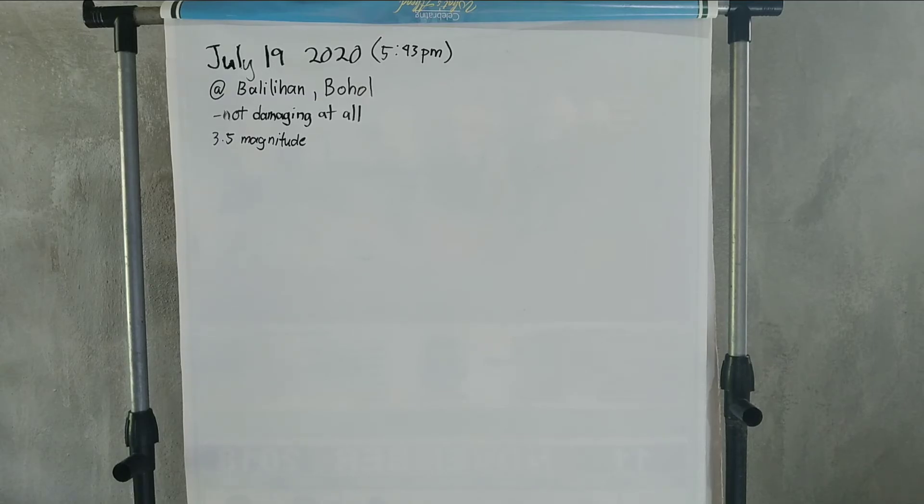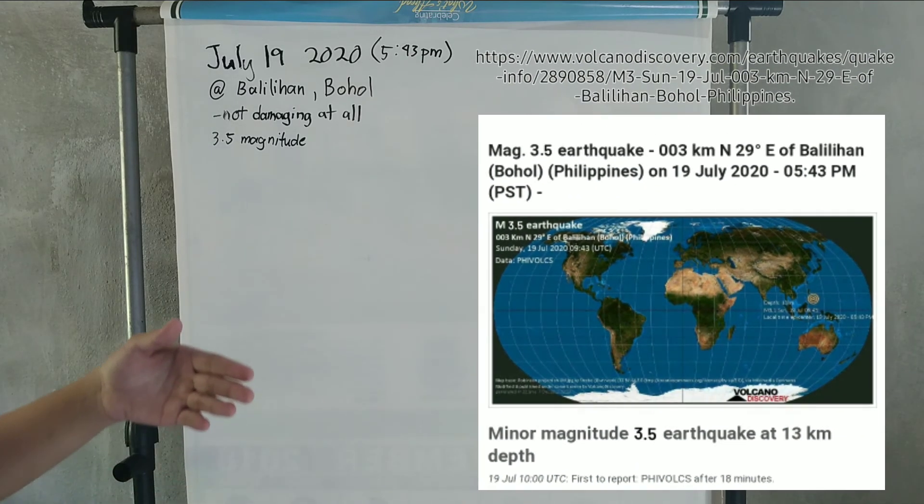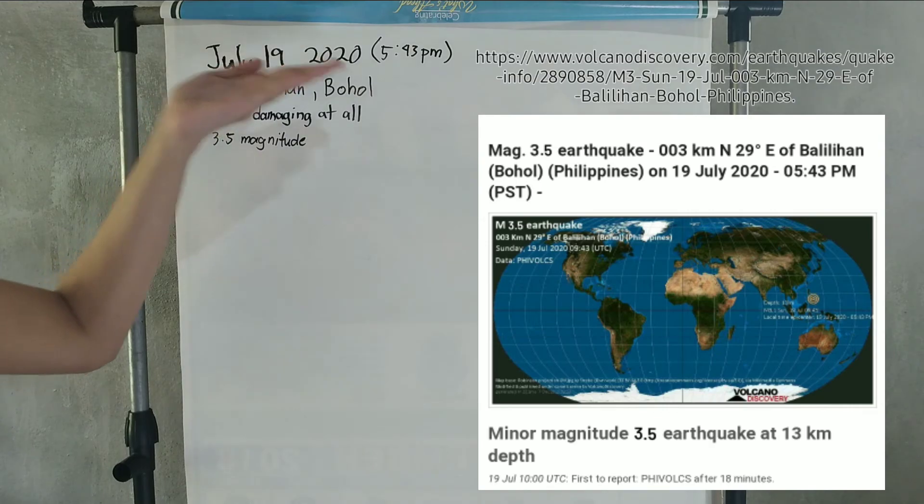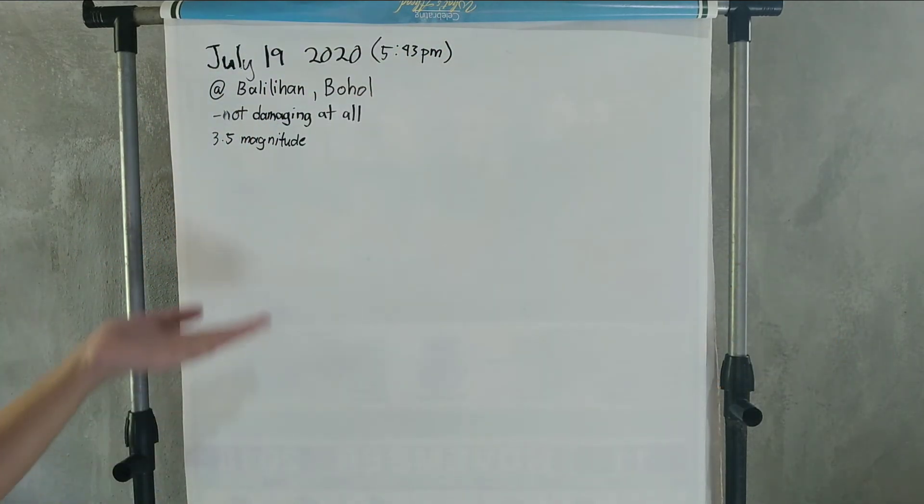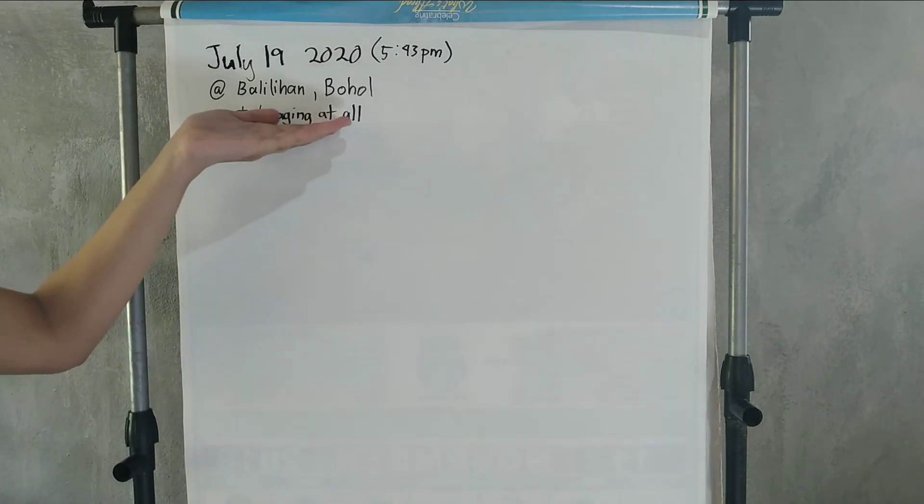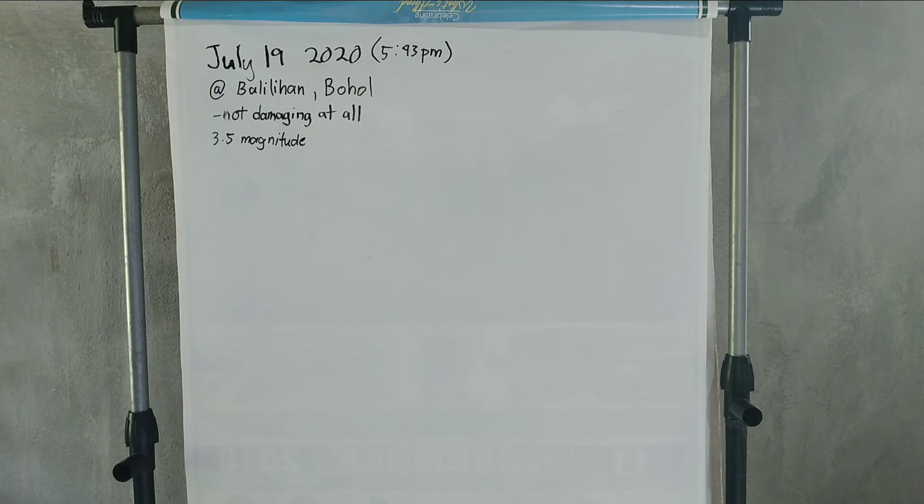Okay, we were tasked to search the latest earthquake here in Bohol and use its magnitude to find the energy released by it. According to my research, the latest earthquake happened in Bohol was last July 19, 2020 at exactly 5:43 PM. The epicenter was at Balilihan Bohol. It was not damaging at all since the magnitude of the earthquake is only 3.5.